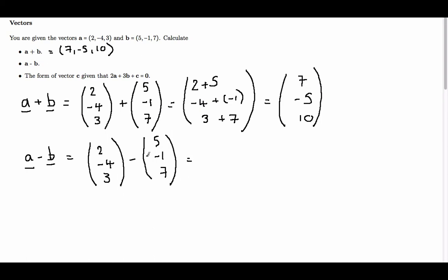So when we take away two vectors from each other, we just take away each component. So we have 2 minus 5, we have minus 4 minus minus 1, and we have 3 minus 7.